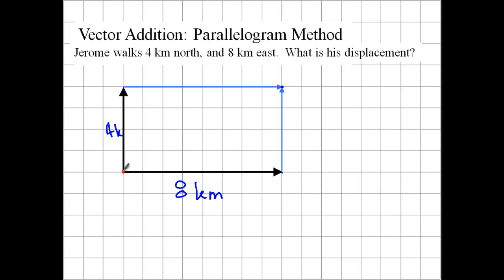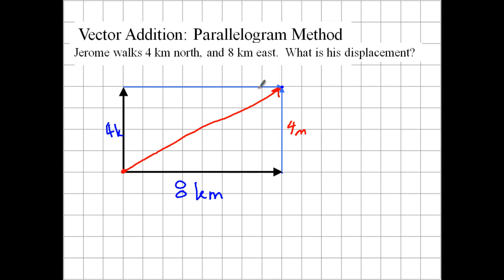What do we do with this rectangle? We take this point where they both start and we draw it to the point where they both end. Because this side is also 4. Remember, you can move vectors as long as you don't change their direction and keep their length the same. So we took these two original vectors and drew another one the same length over here, another one over here, made a parallelogram — in this case a lovely little rectangle.